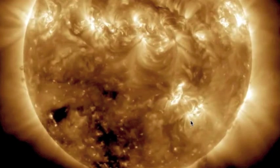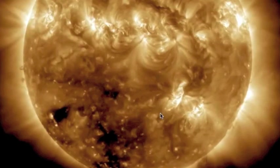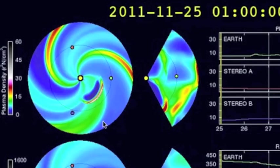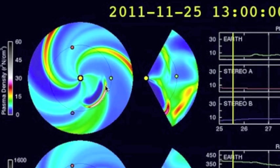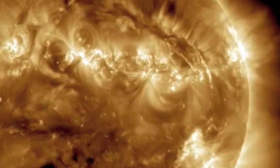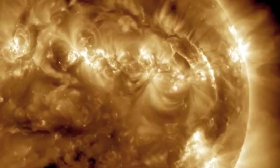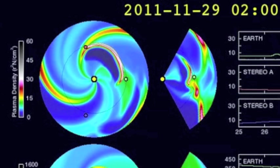This is the coronal mass ejection that hit us today out of solar active region 11354. This one as you can see here, it passes before the 27th.